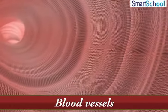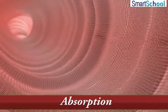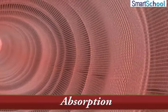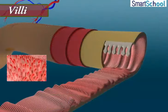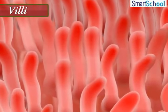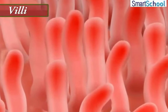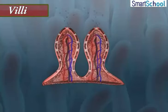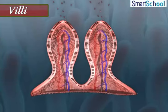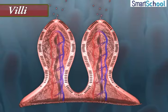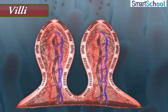This process is known as absorption. The inner walls of the small intestine possess millions of small finger-like projections called villi, which increase the surface area for absorption of digested food by almost eight times. Each villus has a network of thin and small blood vessels close to its surface.